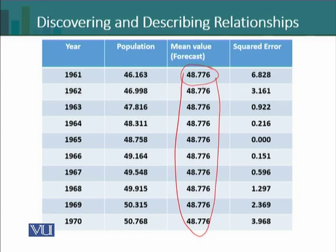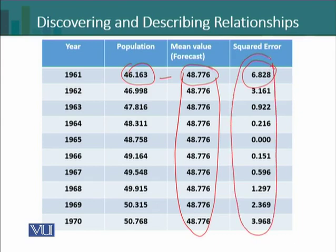We can calculate the squared error by deviating each observation from this mean value. We calculate the squared error for the entire dataset, which provides information about whether this estimate is good or not.